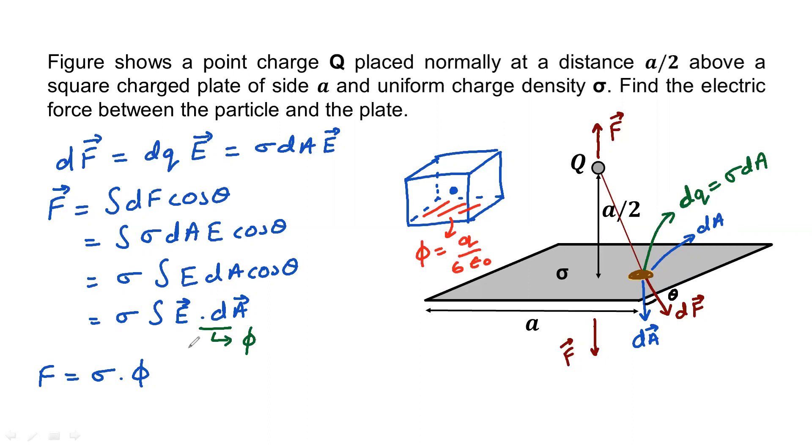Just plug in that value. F is equal to sigma Q by 6 epsilon naught. That is the force on the plate. What we have done here is we've found a relation between electric force and electric flux.